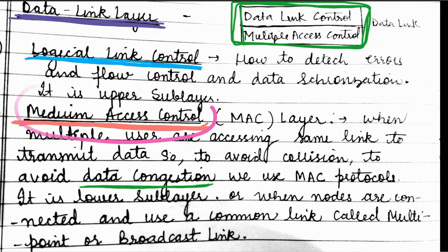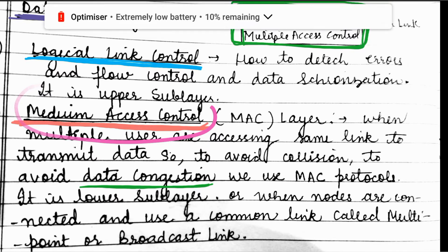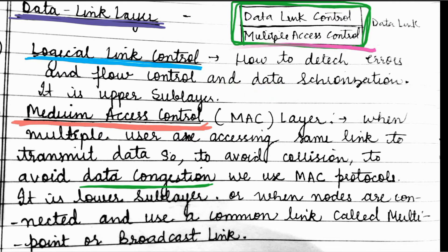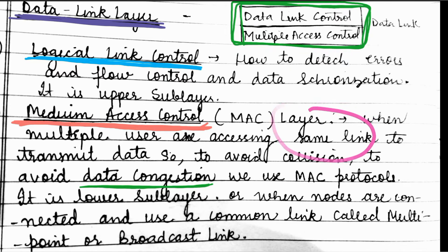The second layer is the medium access control layer. What happens in the medium access control layer? It is used to avoid collision. If we avoid the collision, then we will not have data congestion. So both collision and congestion are avoided. We call it the MAC layer, or medium access control layer. When multiple users access the same link to transmit data, this layer handles it, and error control also works in this layer.